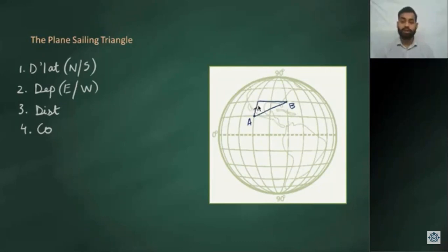D lat is north because we are moving north, and departure will be east because we are moving eastwards.